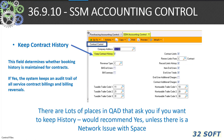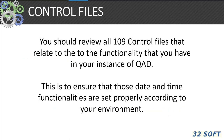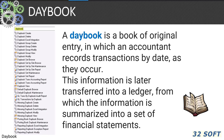The 36.9.10 services support accounting control shows parameters for period-based billing, period partial prorating, last due date billed, last cycle billed, default billing cycle, and start from warranty date. We also see the 'keep contract history' flag — we always want to indicate yes, unless there's a storage space concern. You should review all 109 control files related to your instance of QAD to ensure that date and time functionalities are set properly according to your environment.